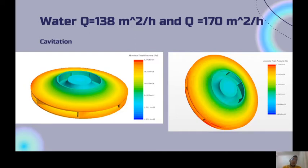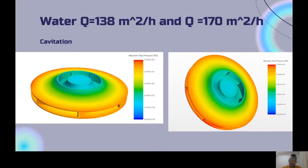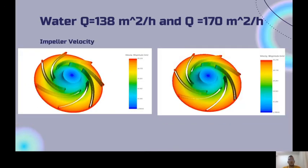Now we have water at 130 m³/hr and 107 m³/hr. On the left, we have the simulation for water at 130 m³/hr, and it is clear that the vapor pressure is less than the vapor pressure of water at the specific temperature of the project, and that is the reason we don't have cavitation. On the right, we have the simulation for water at 170 m³/hr, and it is clear that the same situation applies: the vapor pressure is less than that of water at the specific temperature, so there is no cavitation.